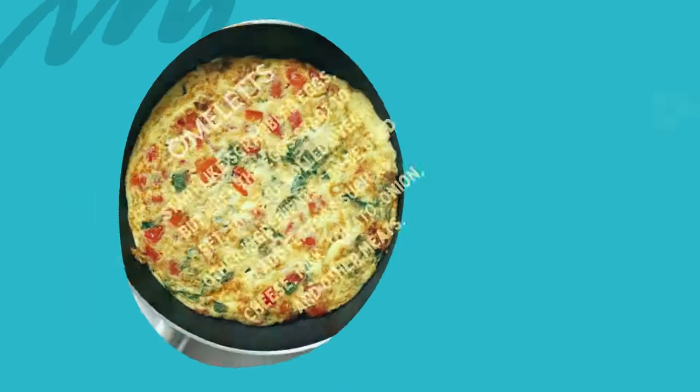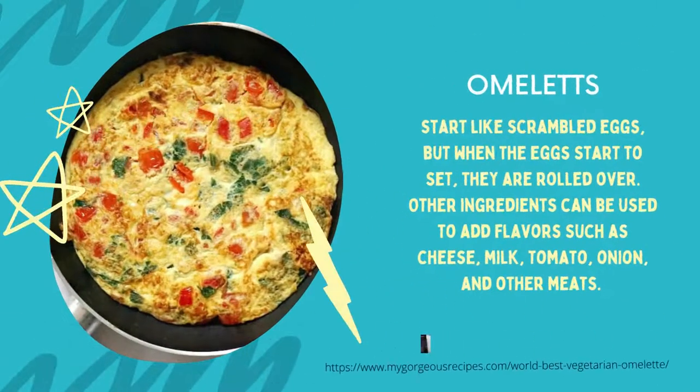This is followed by omelette. It starts like scrambled egg, but when the eggs start to set, they are rolled over. Other ingredients can be added, such as cheese, milk, tomato, onions, and meats.